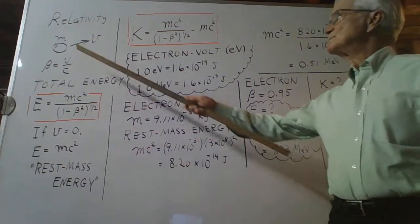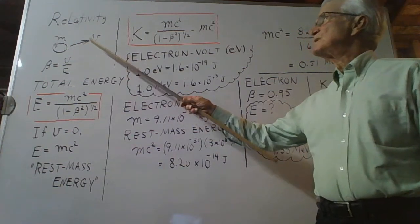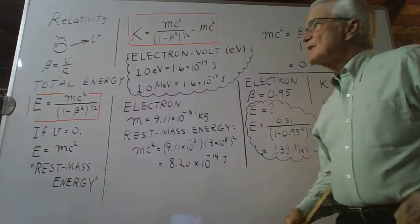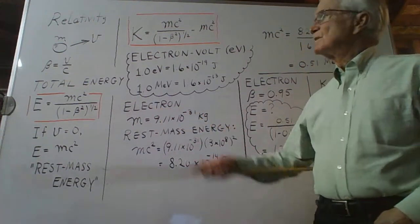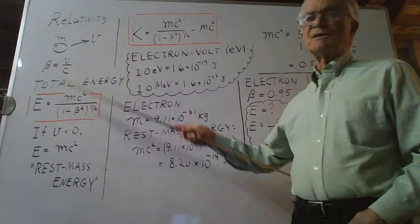I begin by showing you an object of mass m moving with speed v. We define a quantity symbolized as beta, it's the ratio of the two different speeds, the speed of the object to the speed of light.